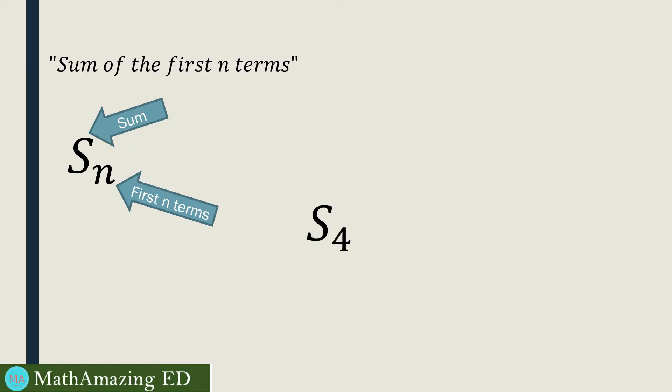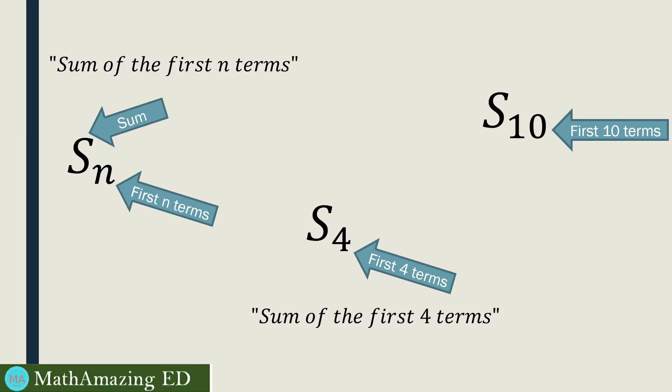So if we have S sub 4, we have first 4 terms, so it is the sum of the first 4 terms. If it is S sub 10, then we have sum of the first 10 terms.